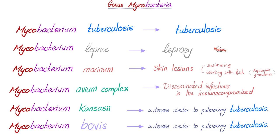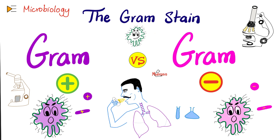Not every mycobacterium is Mycobacterium tuberculosis. We have many other mycobacteria, and they are all acid-fast. That's why the acid-fast test is not specific — it cannot confirm the diagnosis of tuberculosis. To confirm it, you'll need culture.